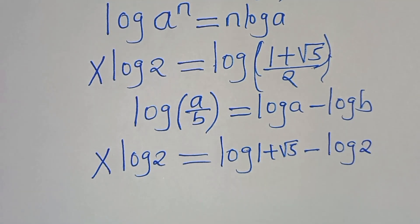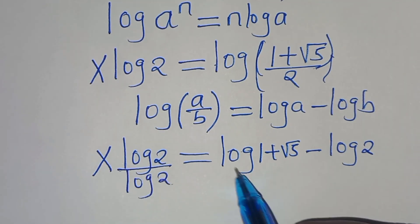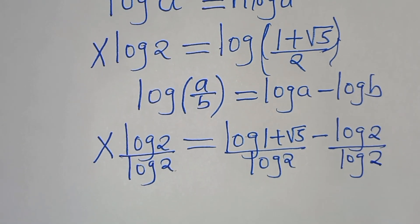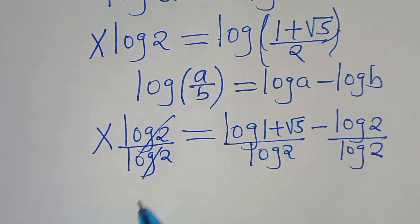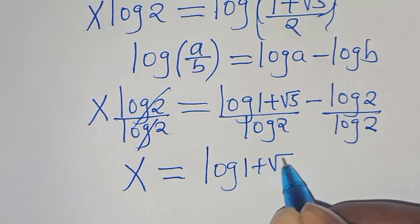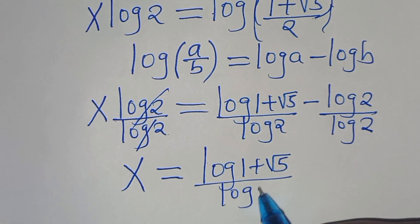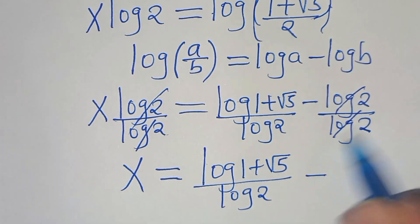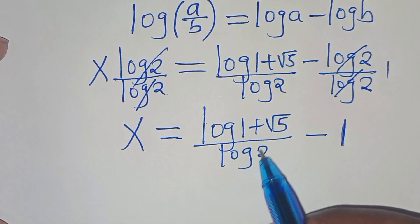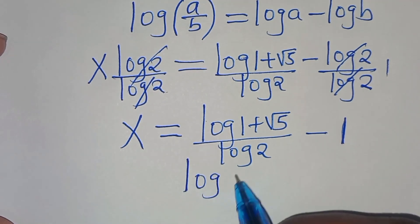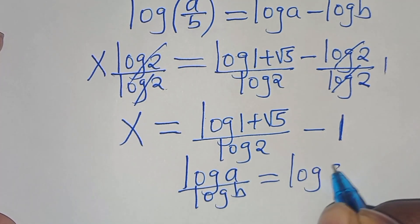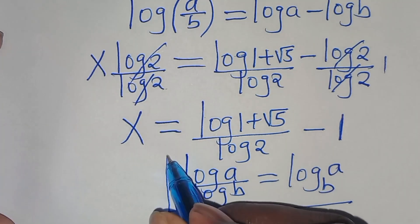The next step is to divide both sides by log 2. So we have x = log(1 + √5) / log(2) minus 1. Now log(1 + √5) / log(2) is in the form log(a)/log(b), which we can express as log base b of a. So applying this logarithm property, x = log base 2 of (1 + √5) minus 1.